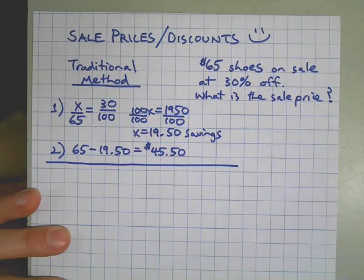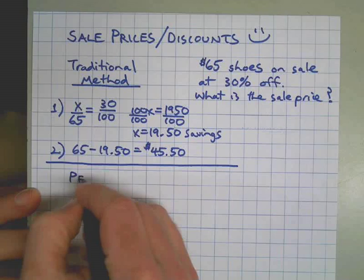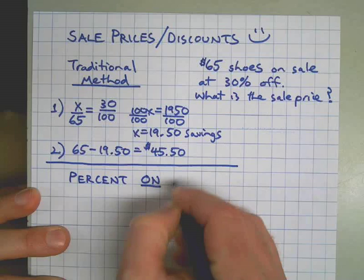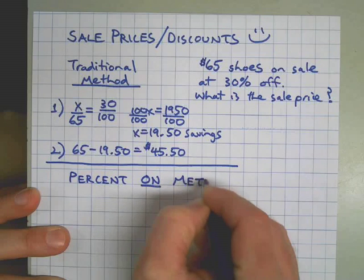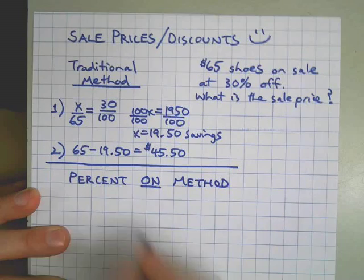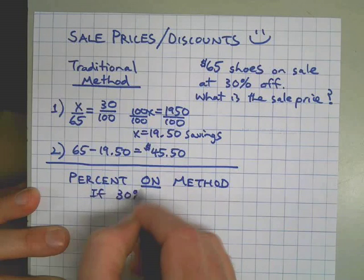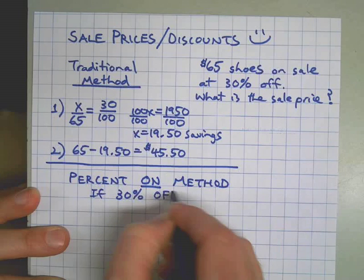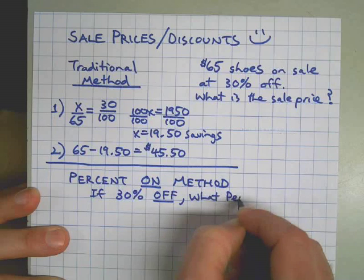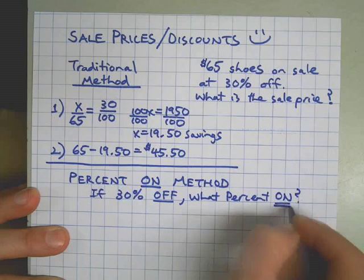Now I'd like to talk about what I call the percent on method. So my question to you: if these shoes are on sale at 30 percent off, what percent are they still on?